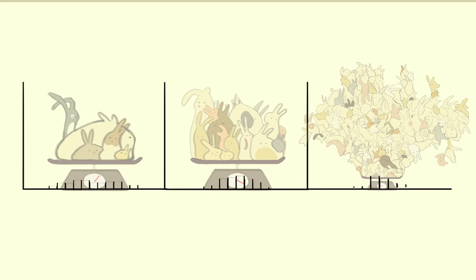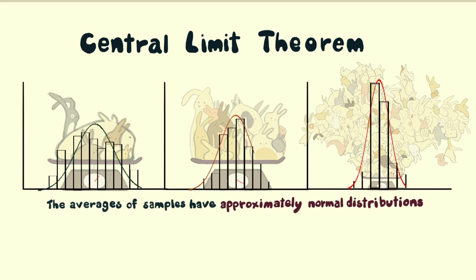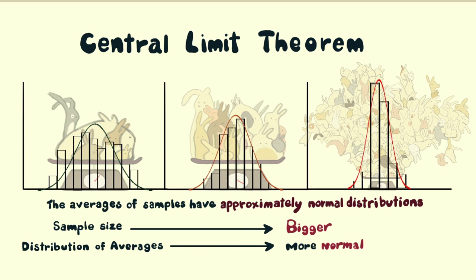What our brave ecologist has just demonstrated is the central limit theorem. The averages of samples have approximately normal distributions. If the sample size increases, this distribution of averages becomes more normal and narrower.